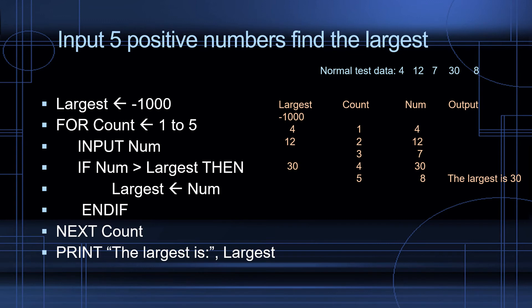Next count. Count equals 3. Input the third number, 7. Is it larger than what's saved in largest? Is it larger than 12? It's not. So next count. Count equals 4. Input the fourth input, which is 30. Is 30 larger than what's saved in largest? It is. It's larger than 12. So now largest has become 30.